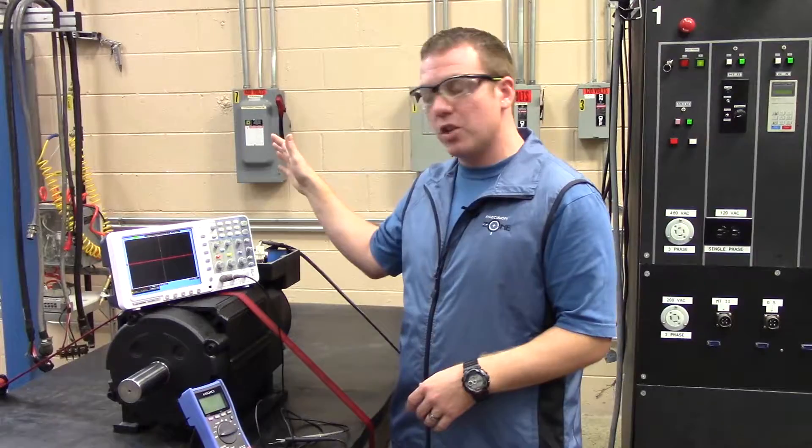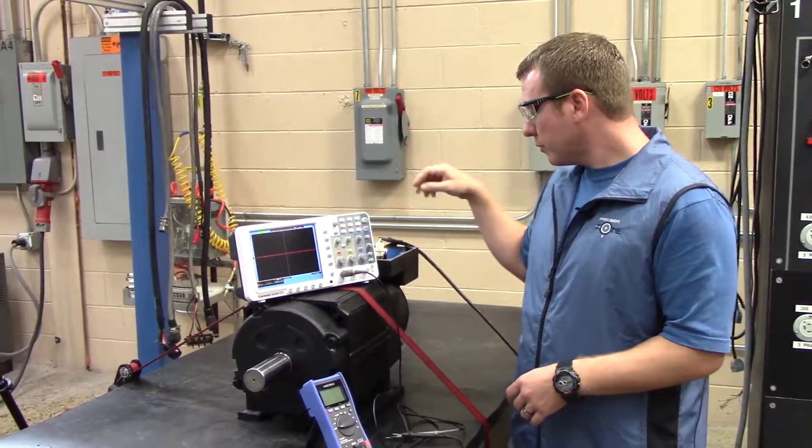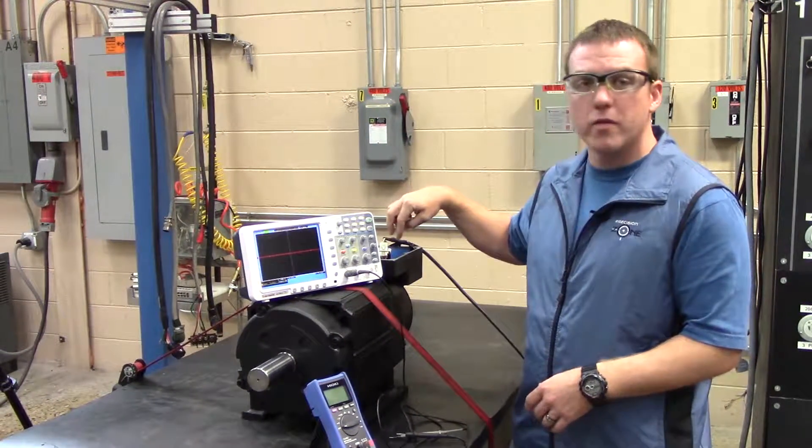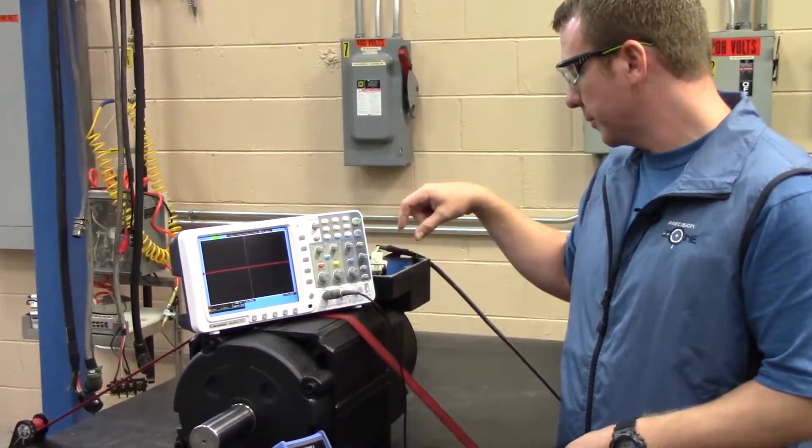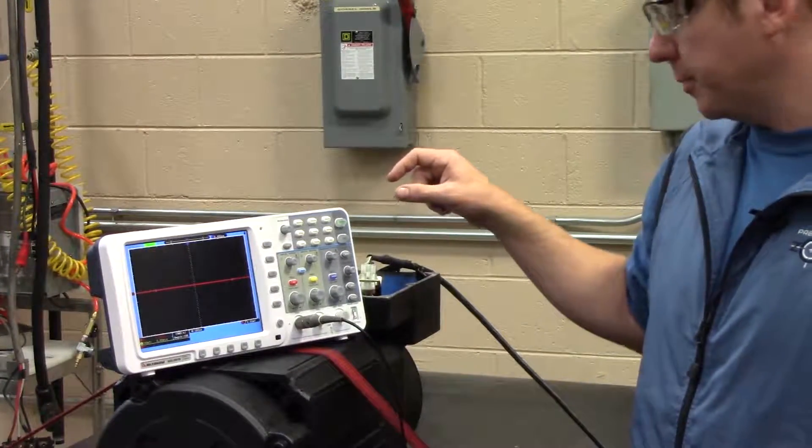Go ahead and get the junction box cover off and it's probably going to be helpful to remove the two screws that hold down the 12-pin connector and lift them up so you can have better access to it.